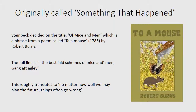The title of the book is somewhat interesting. It was originally called Something That Happened, but Steinbeck decided on the title Of Mice and Men, which is a phrase from a poem called To a Mouse, published in 1785 by Scottish poet Robert Burns. The full line in the poem is: 'the best laid schemes o' mice and men gang aft agley.' This roughly translates to: no matter how well we may plan the future, things often go wrong.